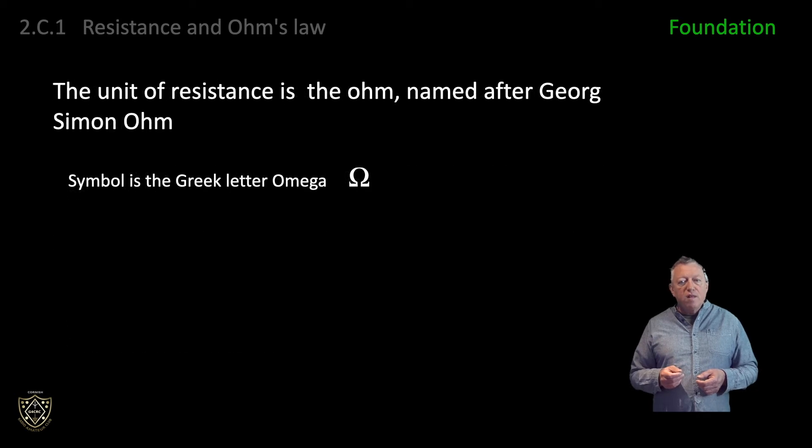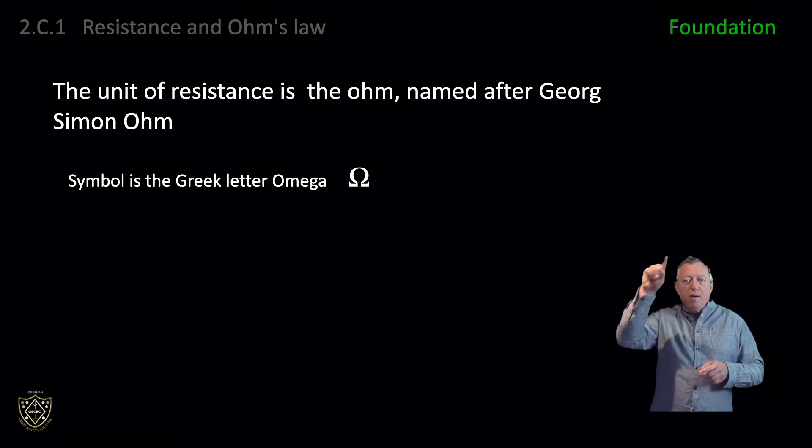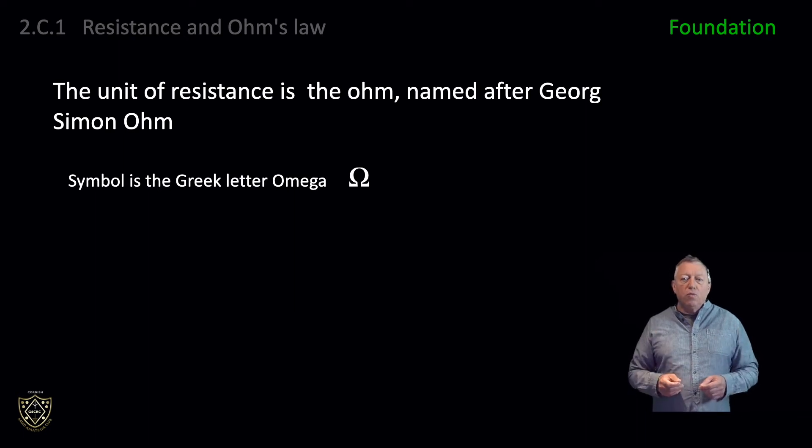The unit of resistance is the Ohm, named after Georg Simon Ohm, and the symbol is the Greek letter Omega. Unlike units which use the first letter or letter combinations from the scientist's name, for example Watt W and Hertz HZ, the Ohm uses the Greek letter Omega, as the letter O is too similar to a zero.